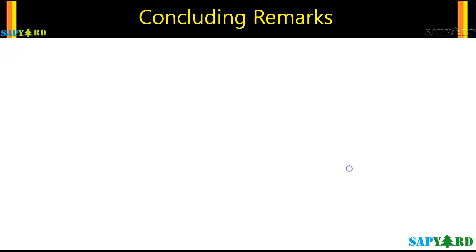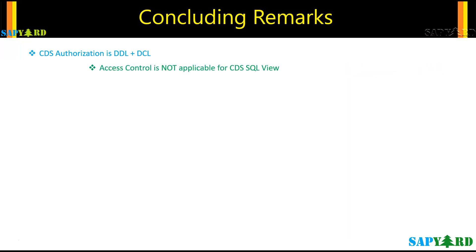Before we close, let us summarize three bullet points. Core data services authorization involves both data definition language and data control language. The CDS access control is the data control part, while the CDS entity to which the CDS access control is tied is the data definition part.